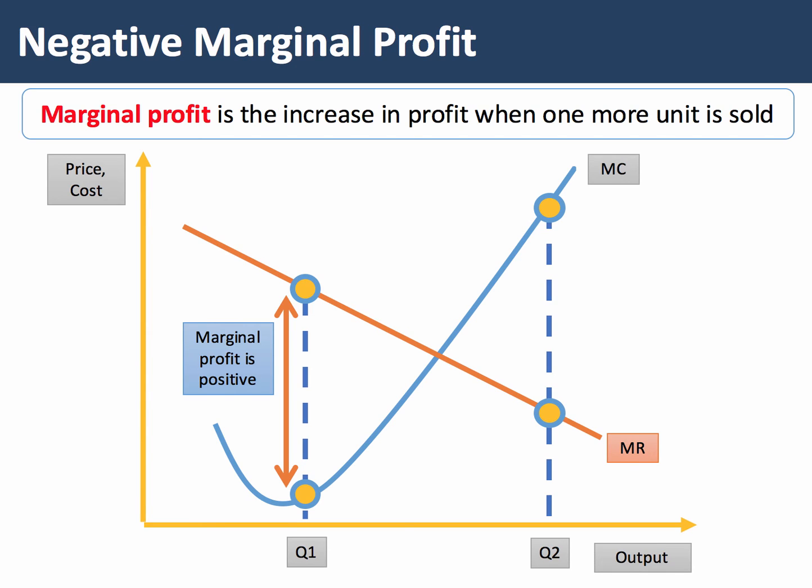Go further to the right — Q2. Here, the marginal cost is greater than the marginal revenue. For example, the cost of production might be £20, and you're only getting £8 of extra revenue, so the marginal profit is minus £12. So at Q1 the marginal profit is increasing and positive; at Q2 the marginal profit is negative.